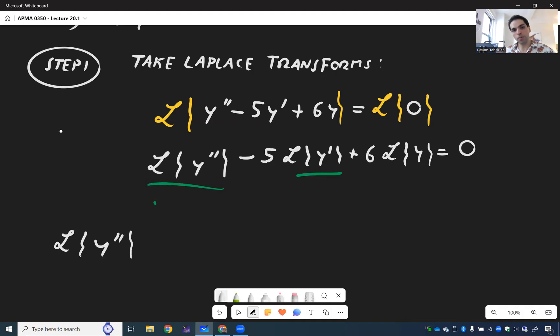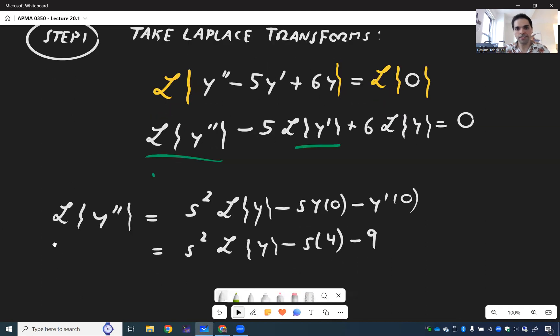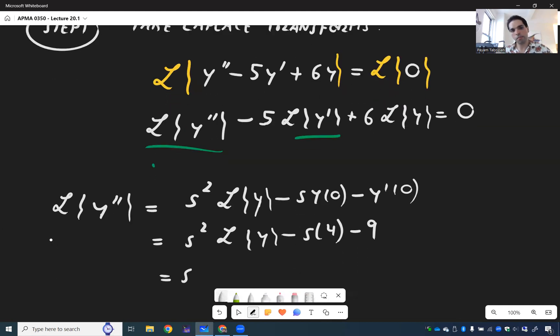So L of y double prime by our miracle is S squared L of y minus S y of 0 minus y prime of 0. Which, because s squared L of y minus S times 4 minus 9. So S squared L of y minus 4S minus 9.